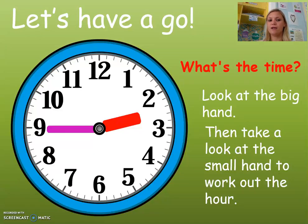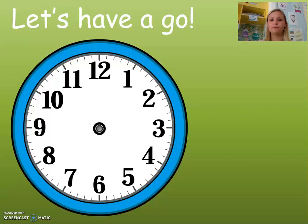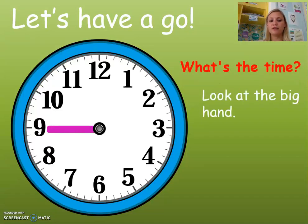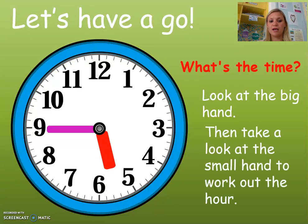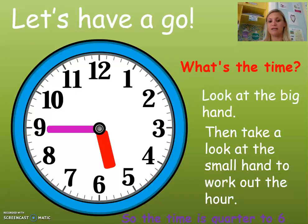So, let's take another look. We look at the big hand — it's on the 9, so it's quarter to. We need to look at the hour hand, the small hand. It's going towards 6, so we know it is quarter to 6.